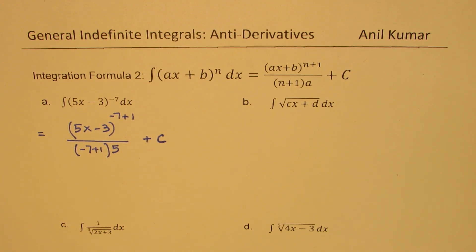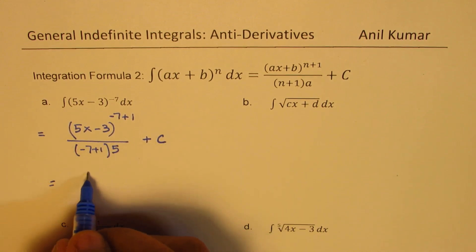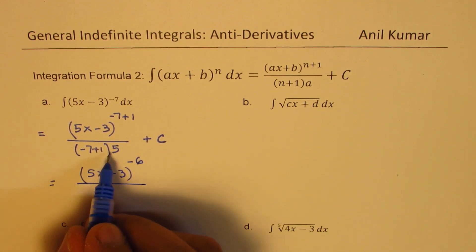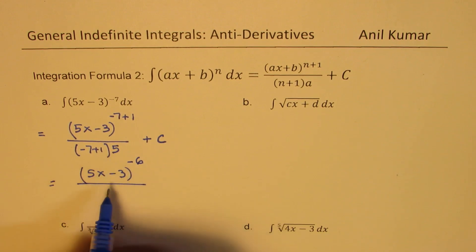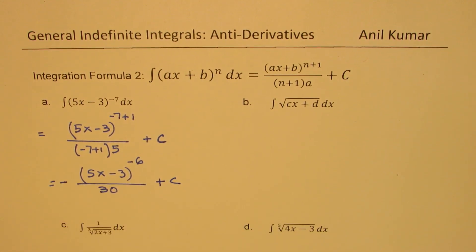The value of C can be found if you know initial conditions or boundary conditions or something else about the given function. The final answer for this will be 5x minus 3 to the power of minus 6 over minus 6 times 5.